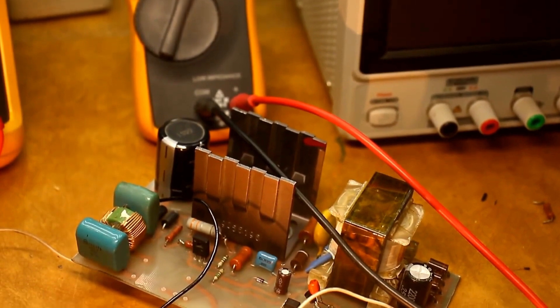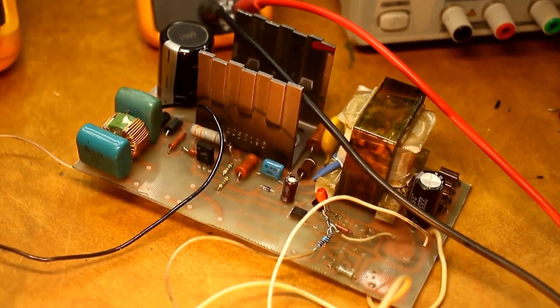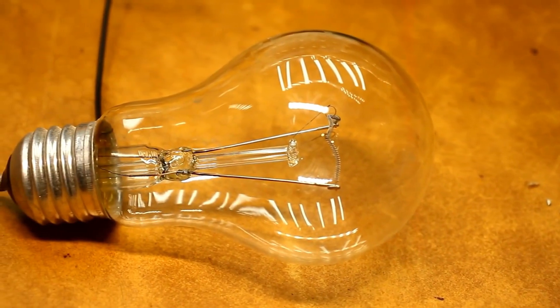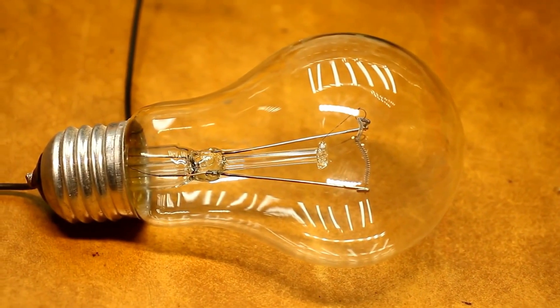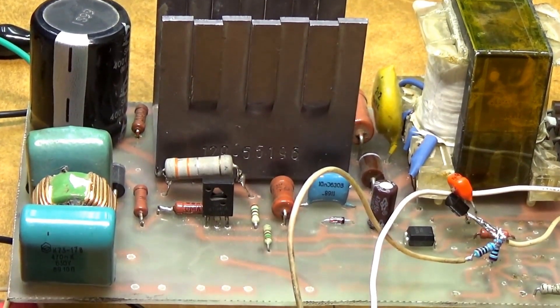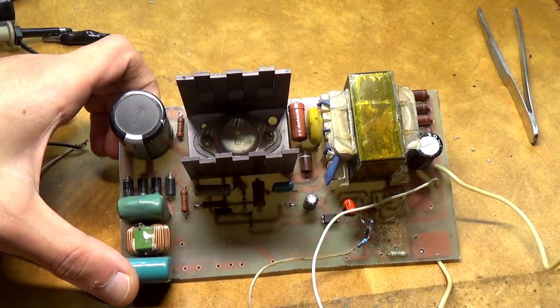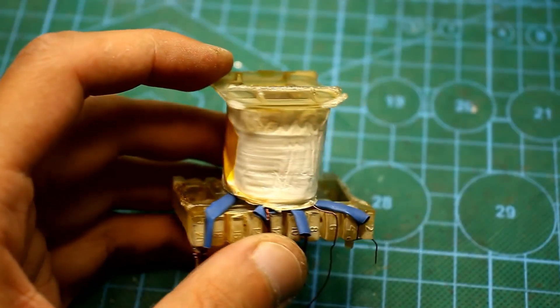Next, we solder the transformer onto the board, thoroughly check everything, and start the power supply, but make sure to do it through an input safety lamp of 220 volts at 40 to 60 watts. In my case, nothing started on the first try. In the end, after the initial diagnostics, I didn't find any problems.